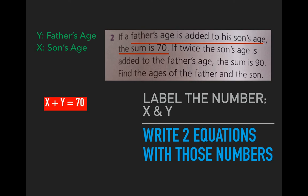The full stop tells us we need to look at a new piece of information to give us a second equation. It says twice the son's age is added to the father's age.